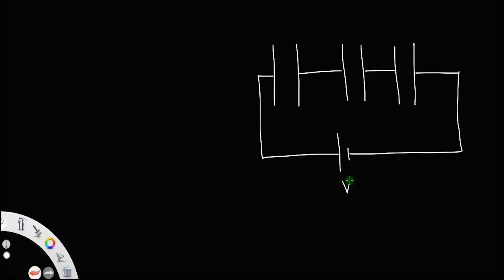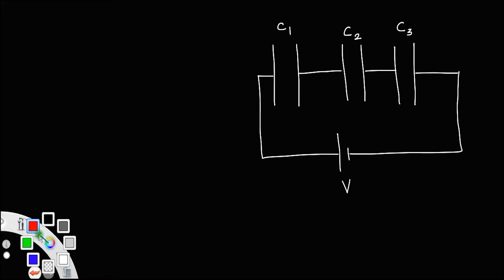Let V be the potential drop across the cell. Let this be the capacitor with capacitance C1, this one is C2, and this one is C3. We know this is the positive terminal of the cell and this one is the negative terminal.